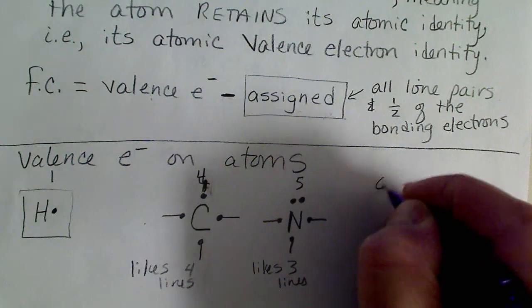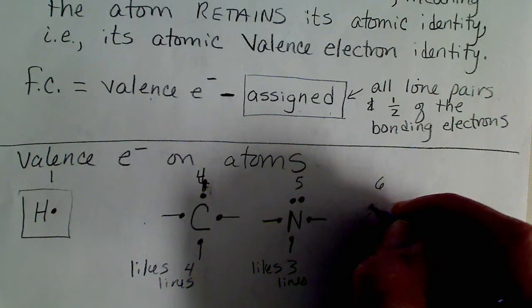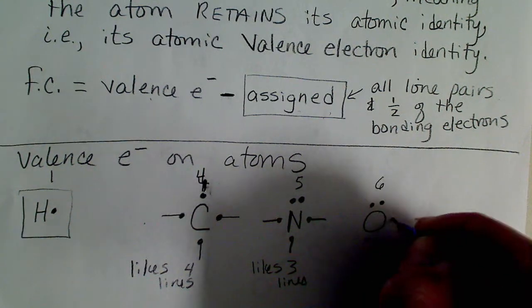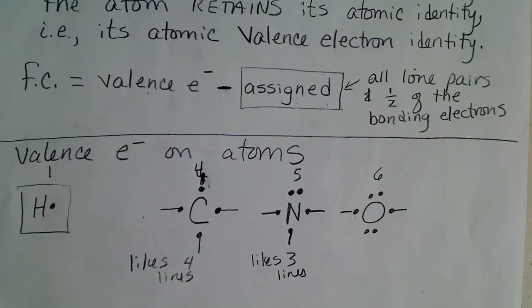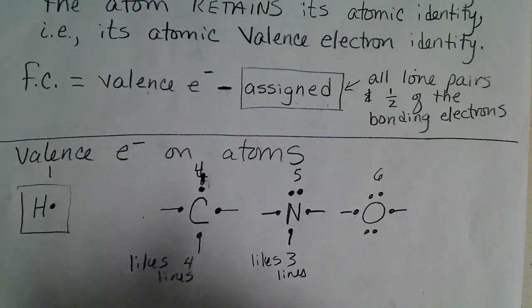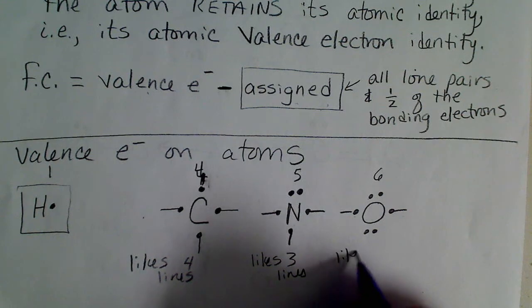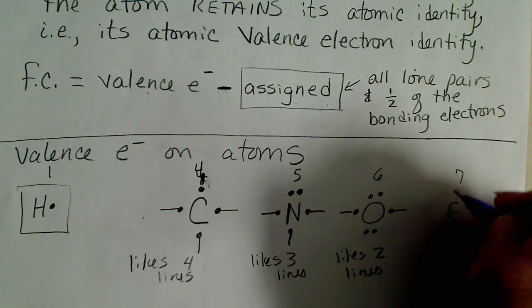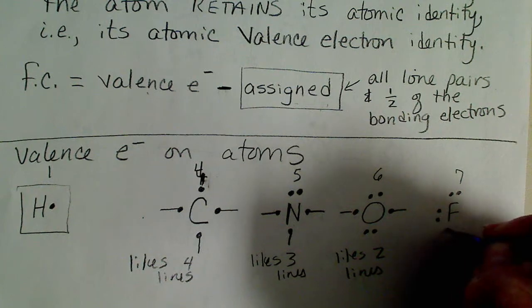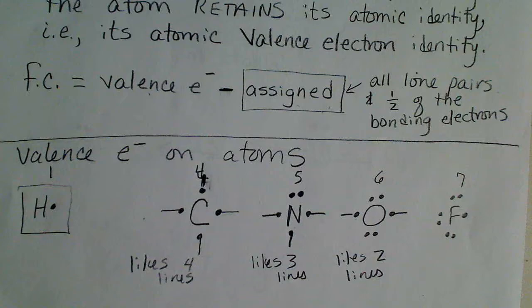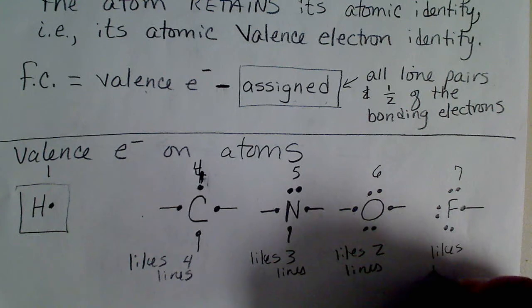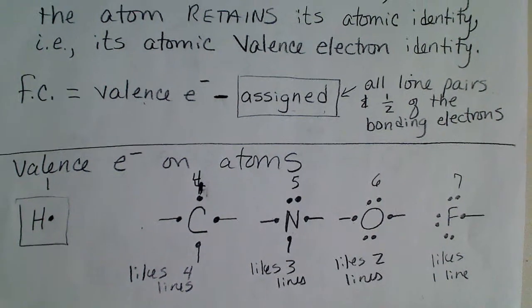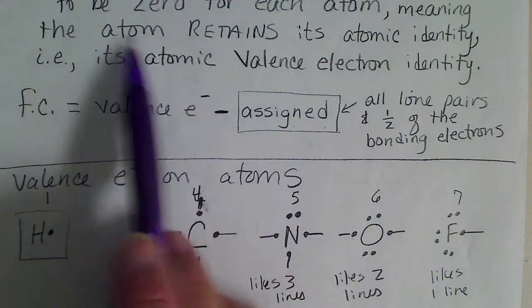Group six is oxygen and sulfur. With six electrons around it, oxygen only needs two more electrons to share to complete its octet, so oxygen likes two lines to it. Group seven — fluorine, chlorine, bromine, and iodine — each of those atoms only lacks one electron from having eight, so the halogen column likes one line.